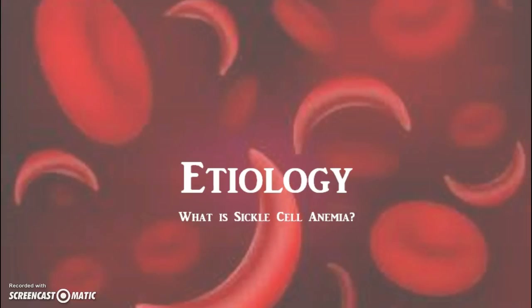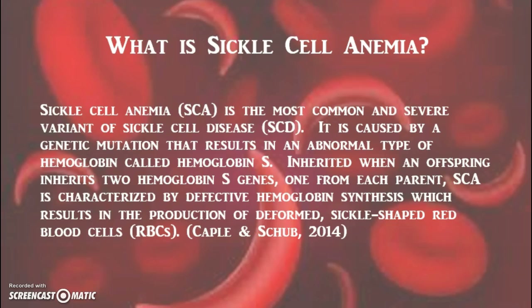What exactly is sickle cell anemia? Sickle cell anemia is a form of sickle cell disease caused by two inherited hemoglobin S genes, one from each parent. Persons with sickle cell anemia produce sickle-shaped red blood cells.